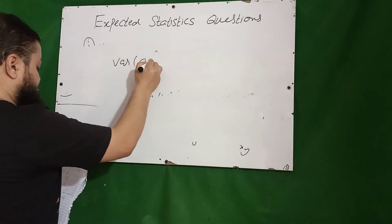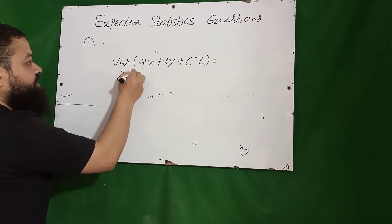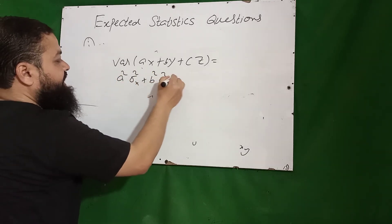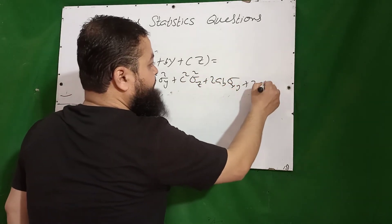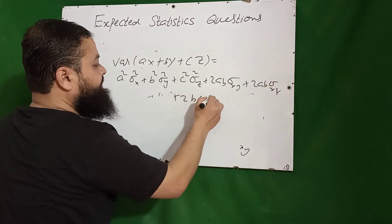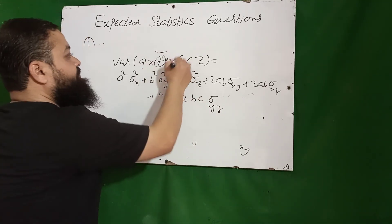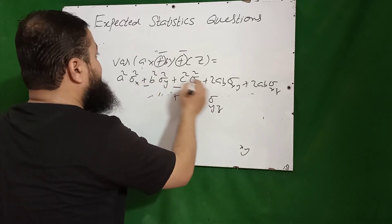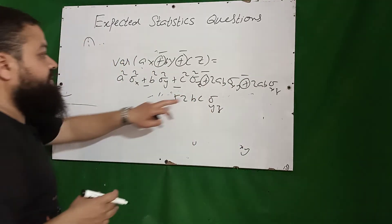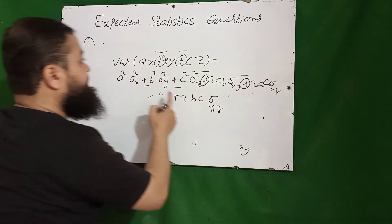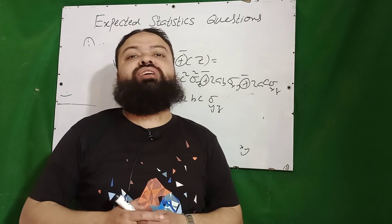The variance of (aX + bY + cZ), when they are not independent, equals a²σ²_x + b²σ²_y + c²σ²_z + 2ab σ_xy + 2ac σ_xz + 2bc σ_yz. If the signs are changed — for example, minus signs between terms — then the cross-product terms become negative accordingly: −2ab, −2ac, and +2bc depending on the signs. You must comment on today's lecture. Assalamu Alaikum.